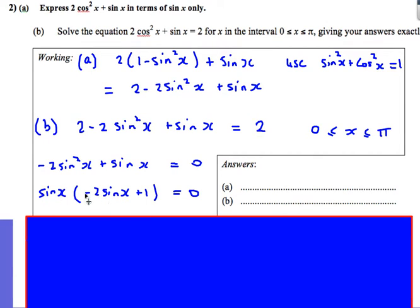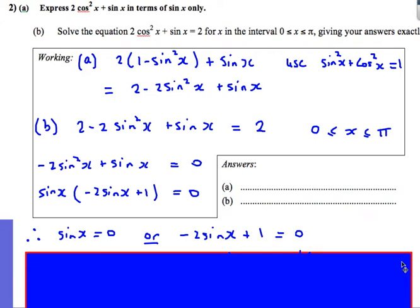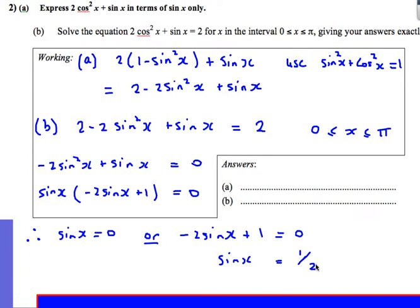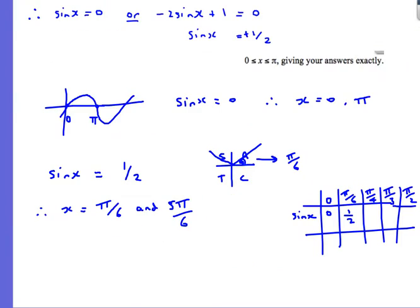We need to solve this. What makes this equal to 0? Either sinx = 0 or the bracket −2sinx + 1 = 0. So sinx = 0 or sinx = 1/2. Let's solve sinx = 0 first. It's best to do a little sketch. For sinx = 0, I have x = 0 and x = π. Remember, I'm allowed to include the endpoints, so x = 0 and x = π.